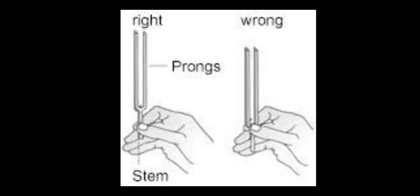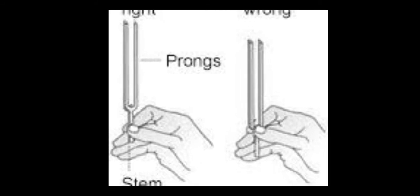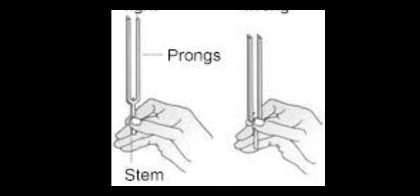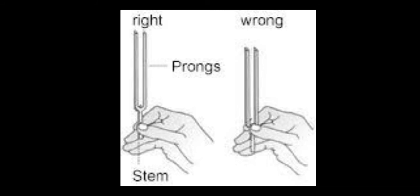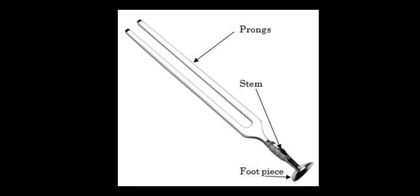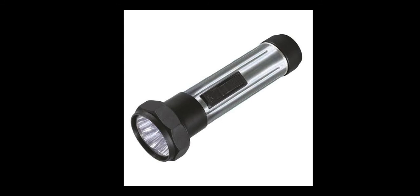Next is the tuning fork. The parts of a tuning fork are the stem and the prongs. It is used for examining the function of the ear — the Weber test and Rinne test are two tests performed with the tuning fork to find out whether the person has conductive hearing loss or sensorineural hearing loss. The three parts are the stem, the prongs, and the foot piece.